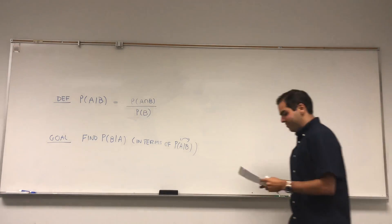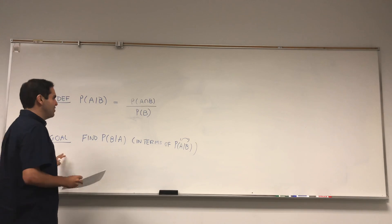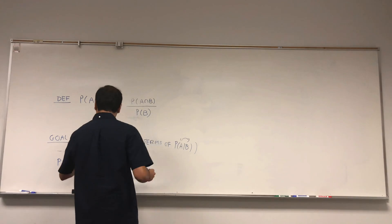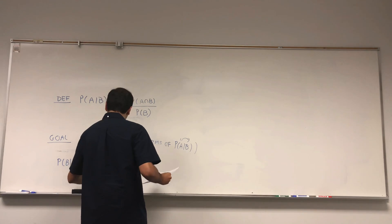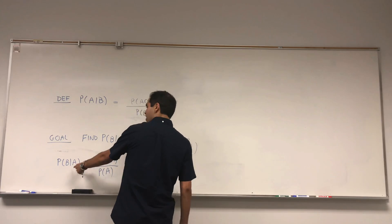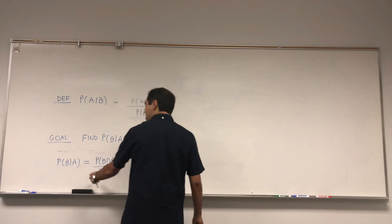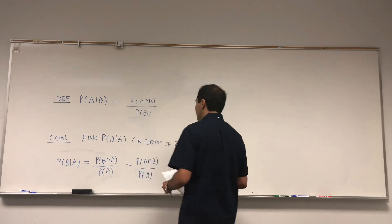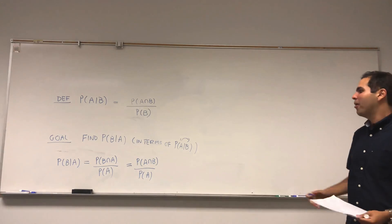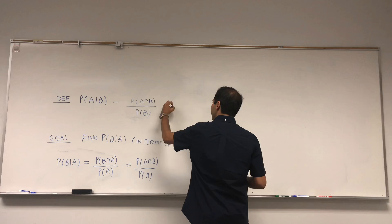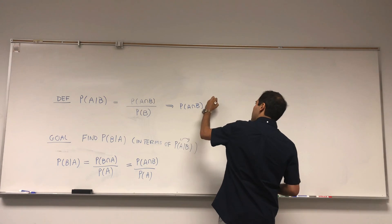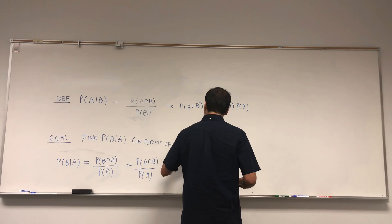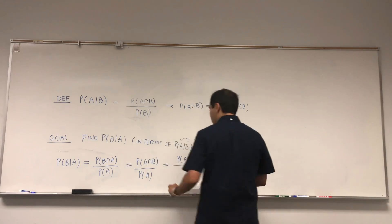Here's a bit of cute math. The probability of B given A uses the same definition when you switch B and A: that's the probability of B intersect A divided by the probability of A. You're always dividing by the probability of the thing you're given. So B given A means you divide by probability of A, and that equals probability of A intersect B over probability of A. Now, this identity tells you that probability of A intersect B equals probability of A given B times probability of B.